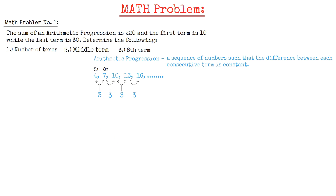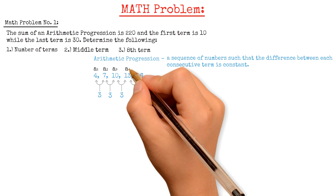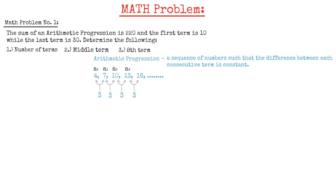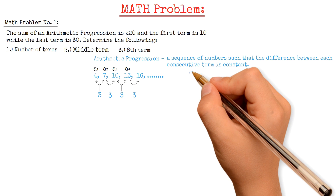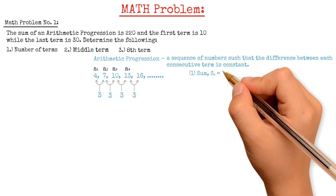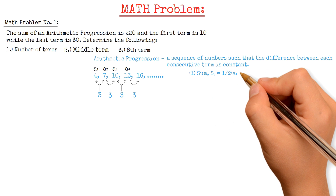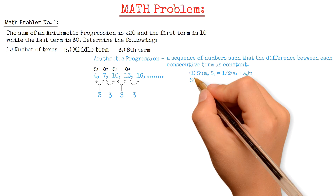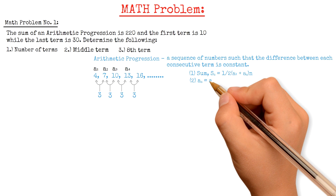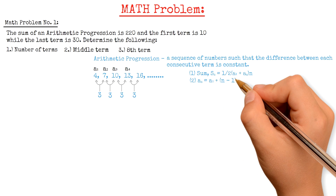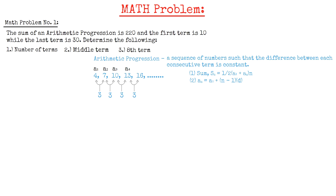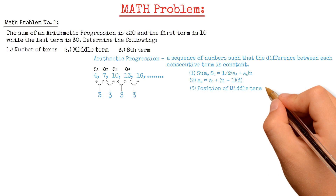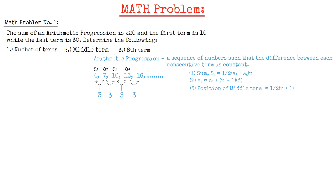This represents the first term, this is the second term, the third term, fourth term, and so on. In arithmetic progression, you should always remember these formulas. First is the sum: Sn equals one-half multiplied by the sum of the first and last term, multiplied by the number of terms n. Second is the nth term: An equals A1 plus (n minus 1) multiplied by the common difference d. And the last one is the position of the middle term, which equals one-half multiplied by (n plus 1).